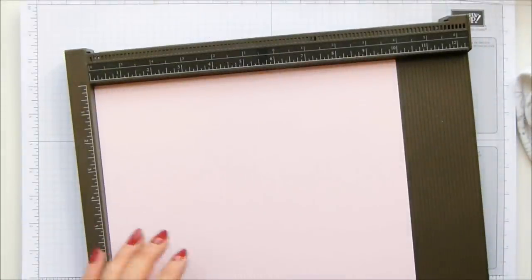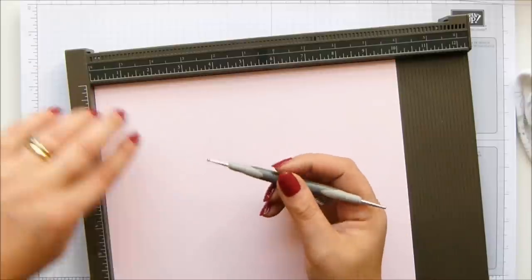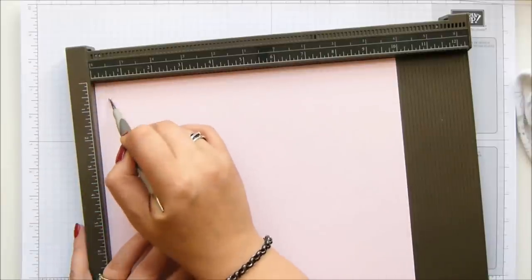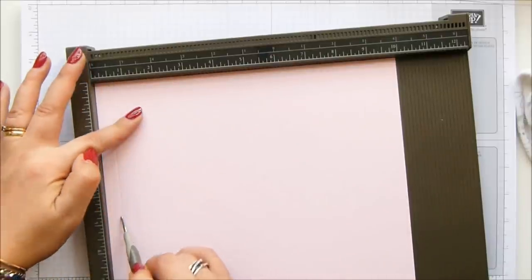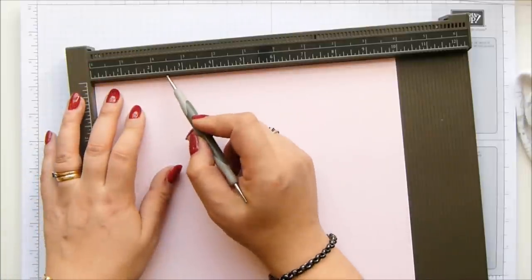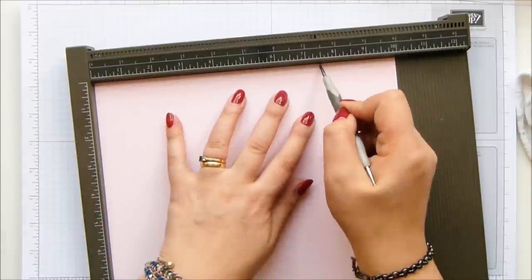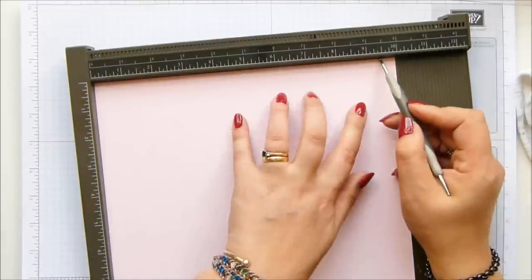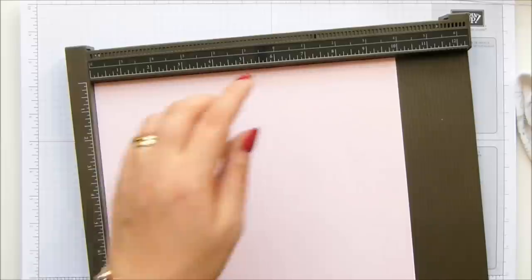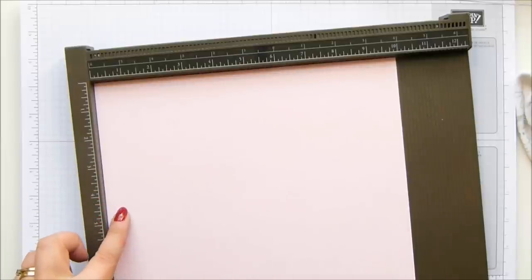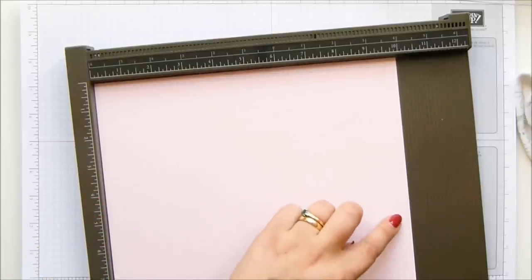On the long side, the first score line comes at half an inch, and then score it at two and a half, seven and a half, and nine and a half inches, and in metric that is one and a half centimeters, six and a half, 19 and 24.